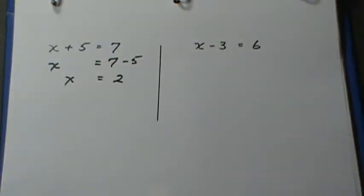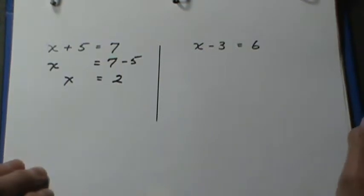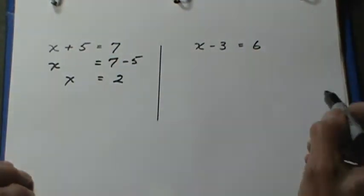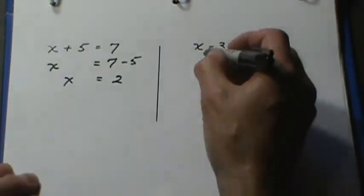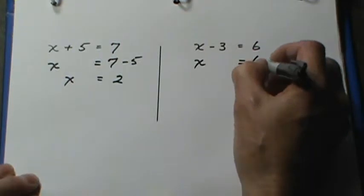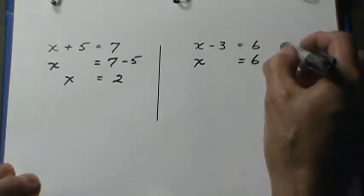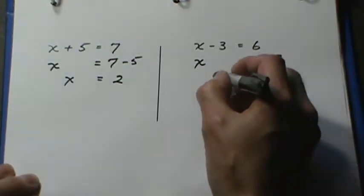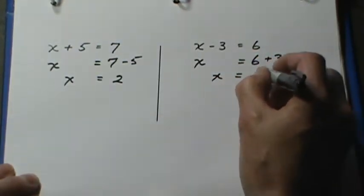Another example, x minus 3 equals 6. If you think about it, x has to be 9. But if you want the equation to tell you the answer, leave the x there and the 6 over here. Remove the minus 3 on this side, write plus 3. And x is equal to 9.